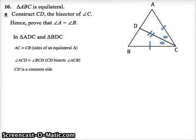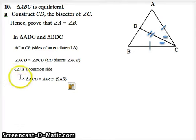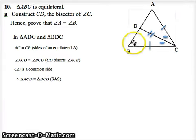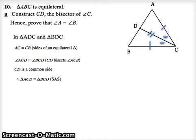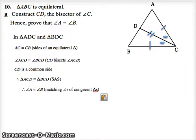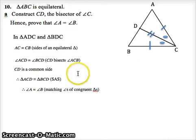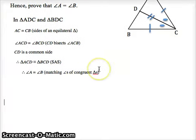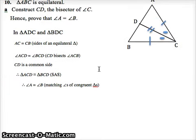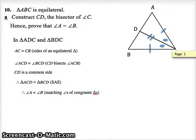Therefore the two triangles are congruent by side-angle-side. Now that the two triangles are congruent, this angle at B and this angle at A are corresponding or matching angles of congruent triangles. Hence we've proved that angle A equals angle B because they are matching angles of congruent triangles. That's the end of question 10A.